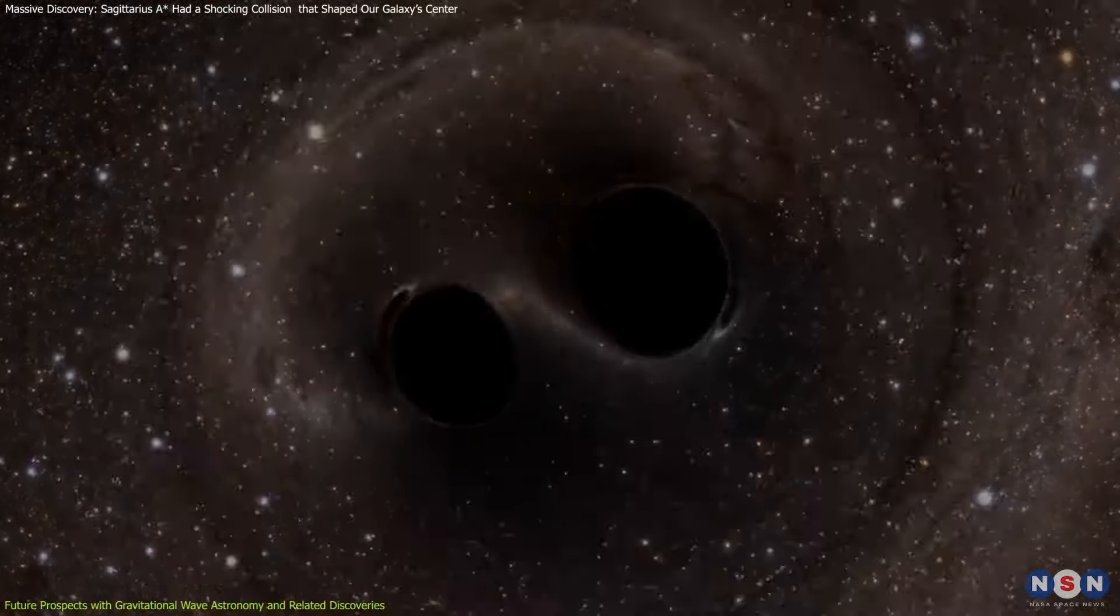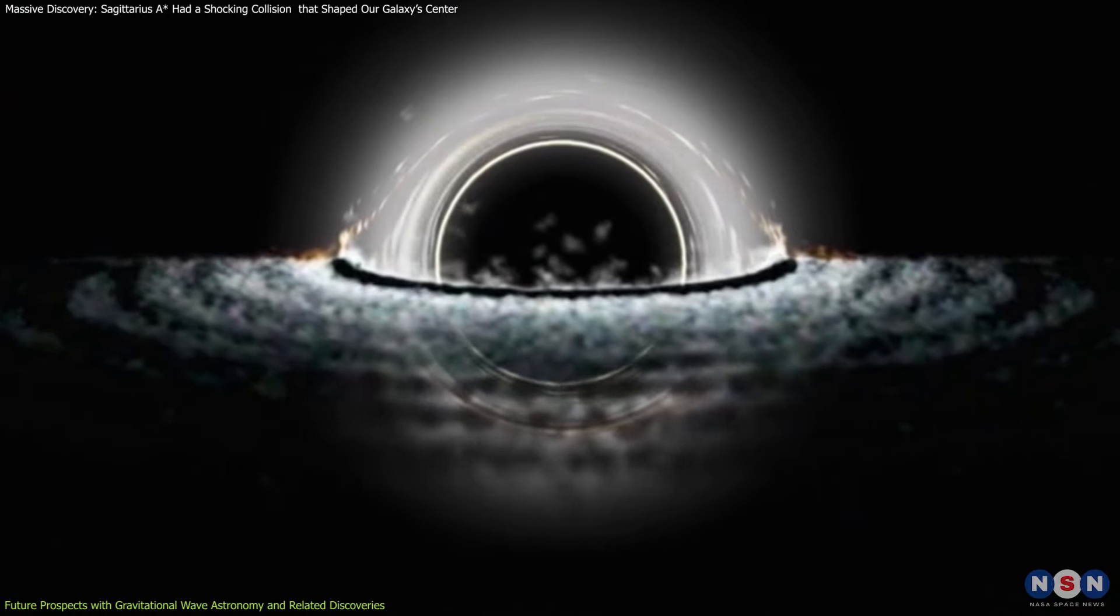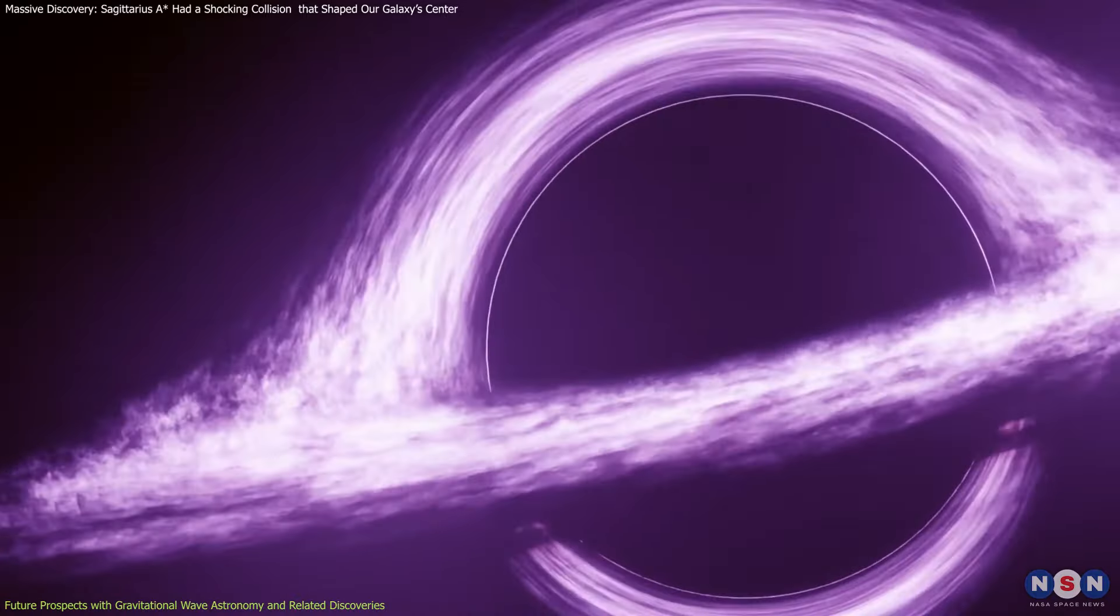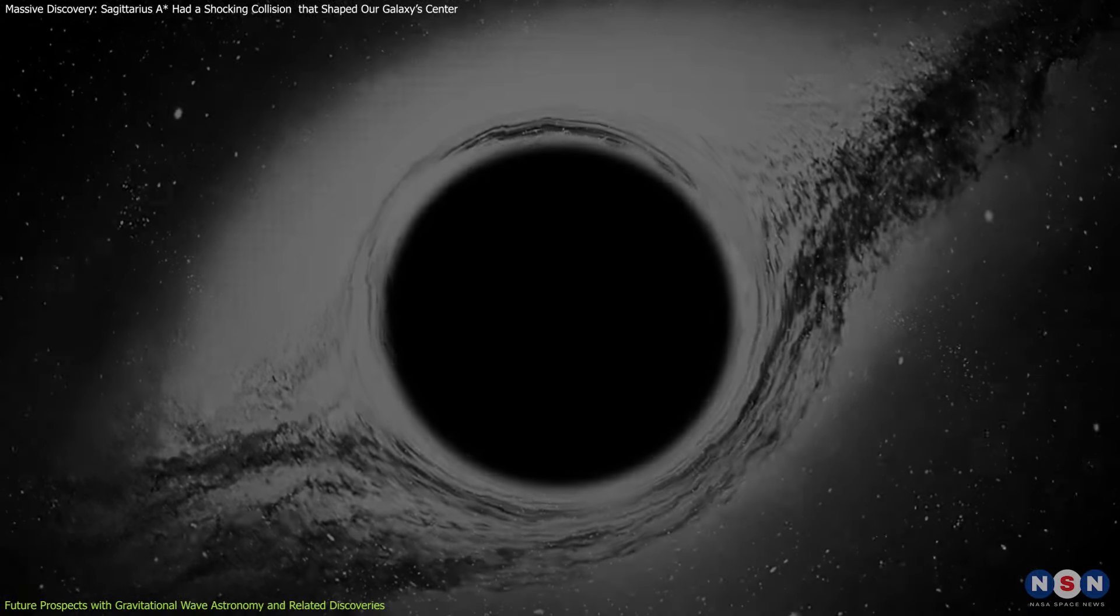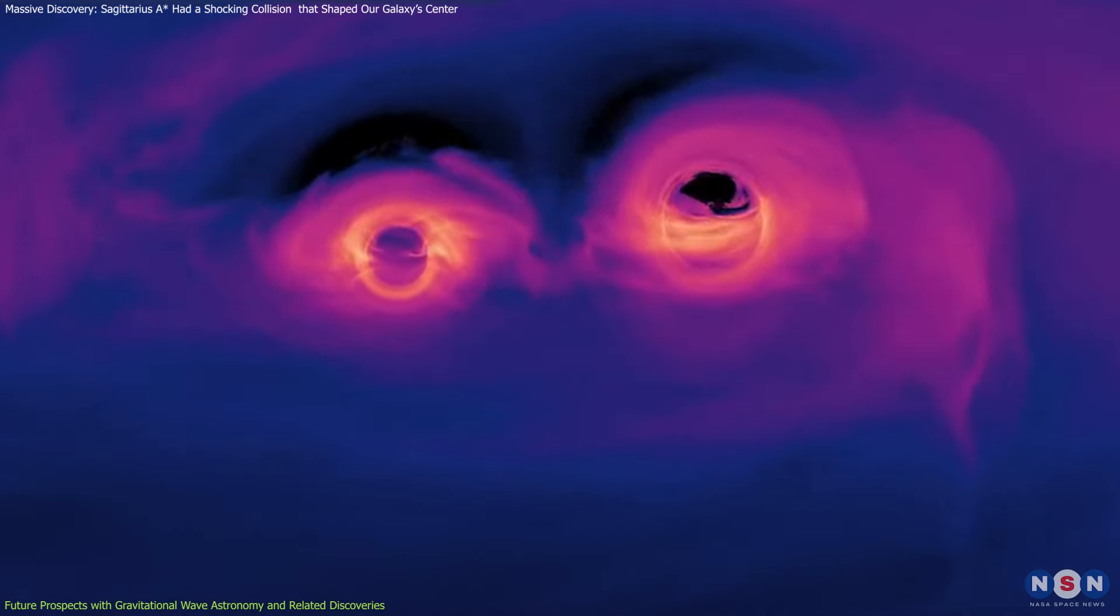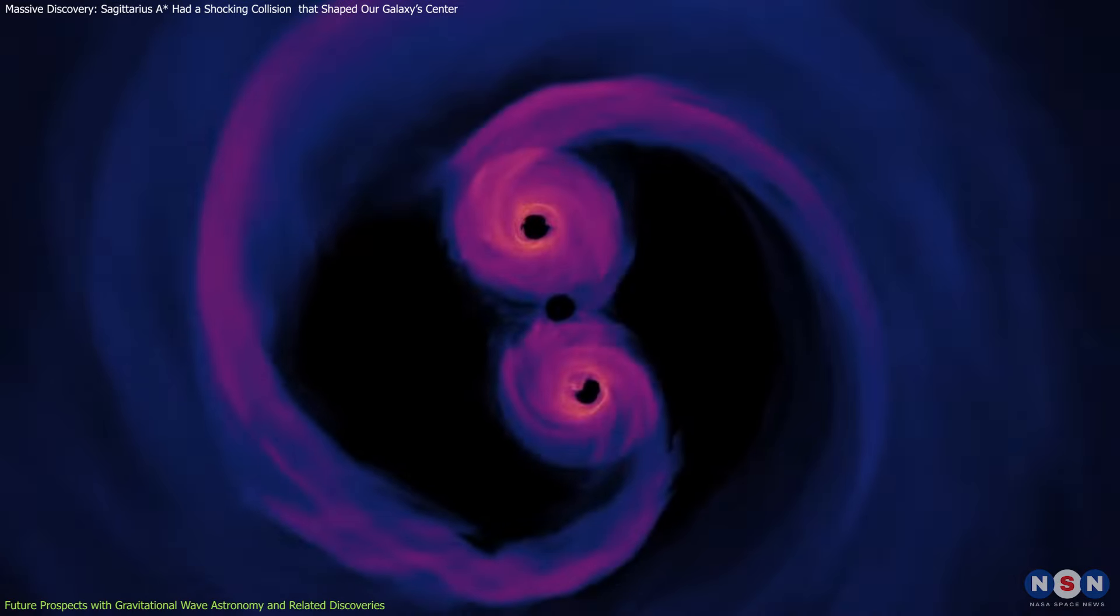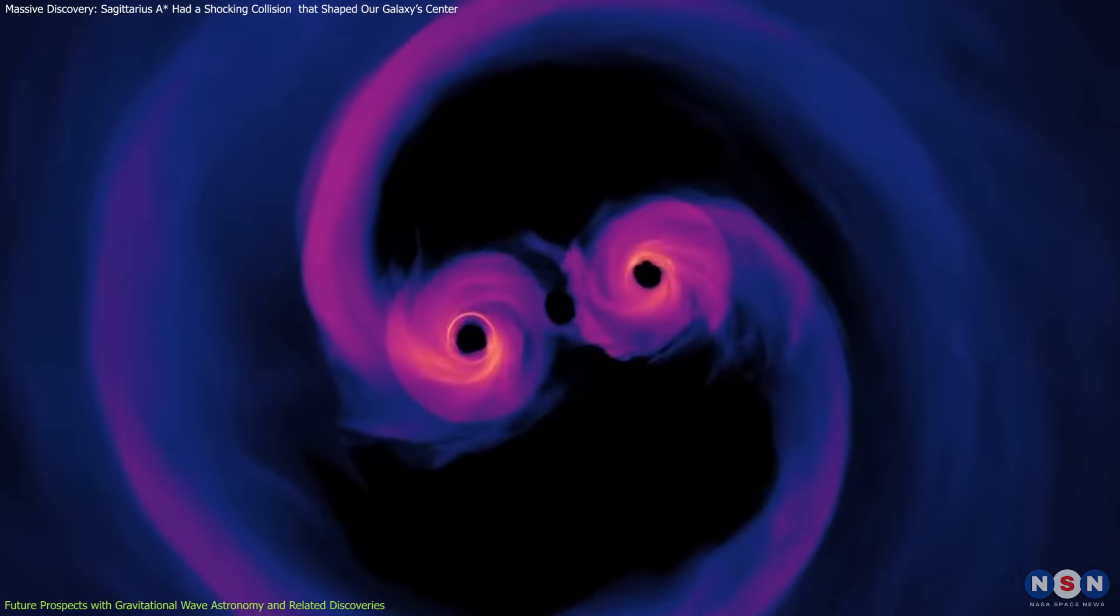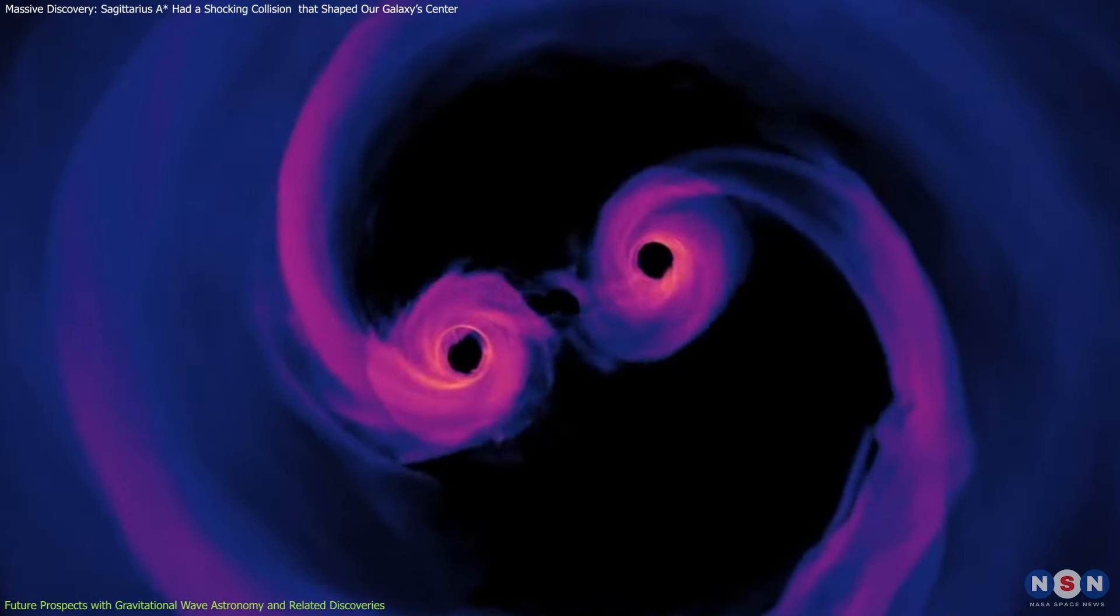In parallel, the discovery of intermediate-mass black holes, seen as the missing link between stellar mass and supermassive black holes, offers additional context. Recent detections of such mergers by LIGO and Virgo hinted a continuum of black hole growth stages, further supporting the idea that smaller black holes merge to form larger ones over cosmic timescales.